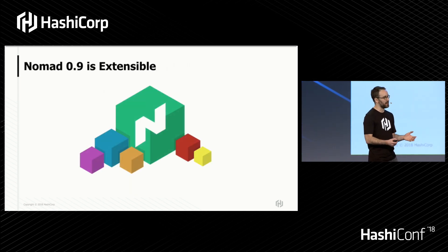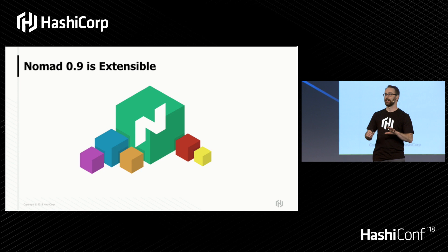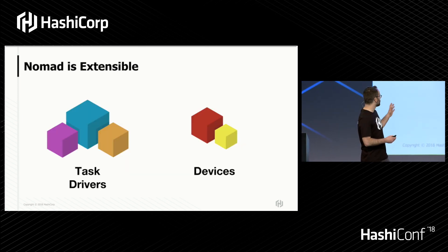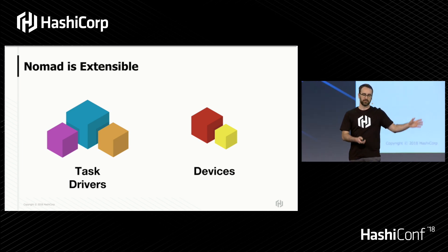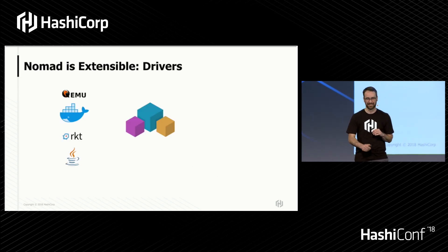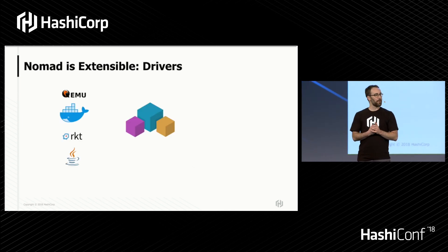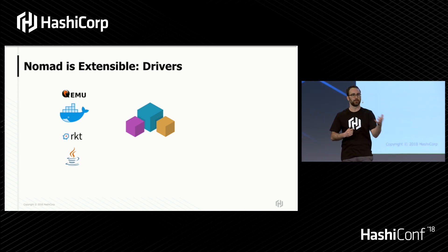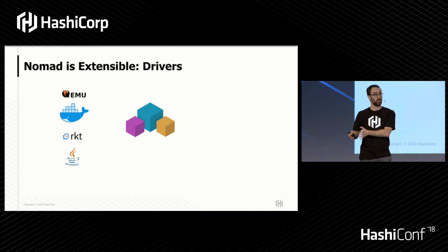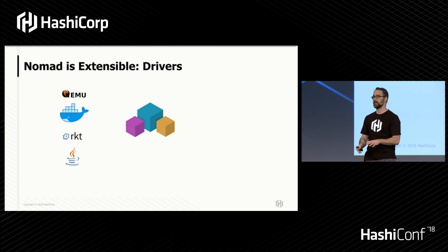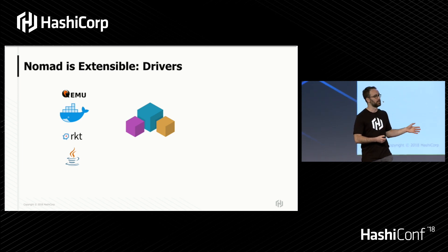We're very excited that in Nomad 0.9, a major focus is making Nomad extensible. To make Nomad extensible, we're starting by creating task driver plug-ins and device plug-ins. All of our existing task drivers — QEMU, Docker, Rocket, Java — all of them are going to be plug-ins themselves. The plug-ins that the community creates, that you create internally, are going to have the same functionality and APIs available to them that our built-in plug-ins do.